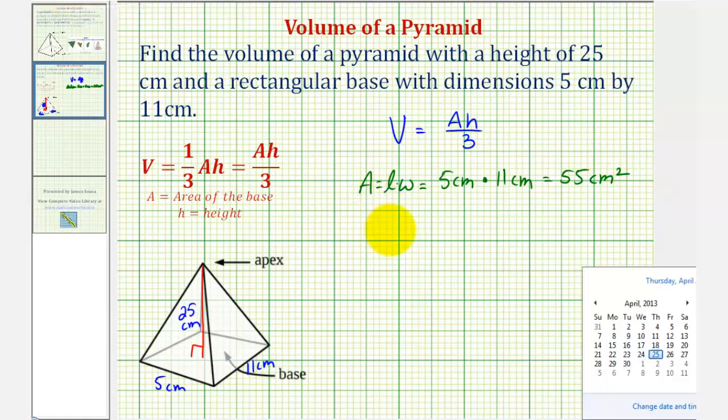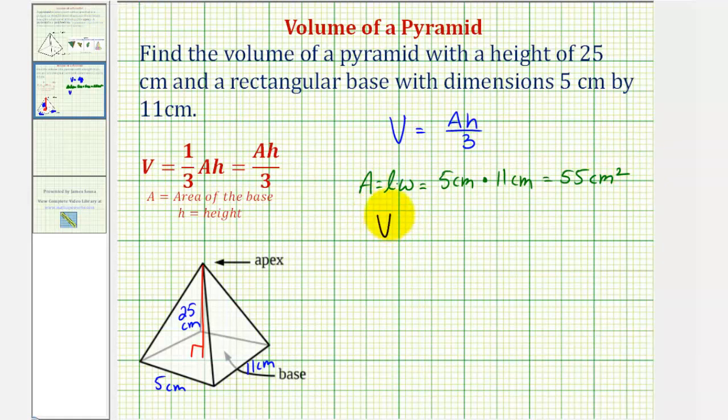Therefore, the volume is going to be equal to 55 centimeters squared times the height h, which is 25 centimeters, divided by 3.